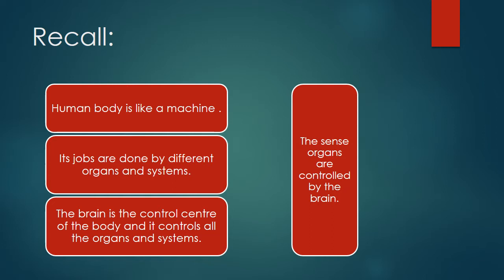Before going to start the new topic, you must recall that the human body is like a machine, because it can do many kinds of work just like a machine. All this work is done by organs and systems working together. The brain is the control center of the body — it is the boss because it controls all the systems of the body, including the sense organs, and all information from our environment is controlled by the brain.